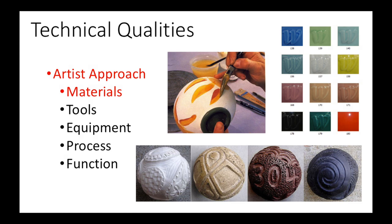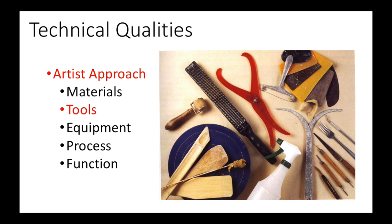Technical qualities refer to the artist's approach. Considerations include materials, tools, equipment, and process. Ceramic artists have quite a variety of materials to consider: choosing the clay body as discussed in Unit 2, and the many glazes, stains, and colorants covered in Unit 4. In Unit 3, we talked about tools commonly used by ceramic potters and sculptors. Some tools are purchased specifically for working with clay, while others may be made by the artist. Some artists use quite an array of tools, while others use nothing but their hands.